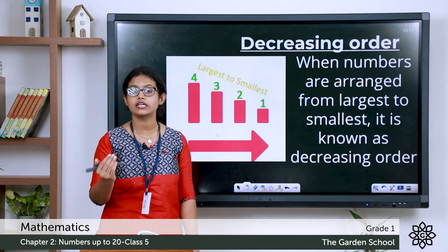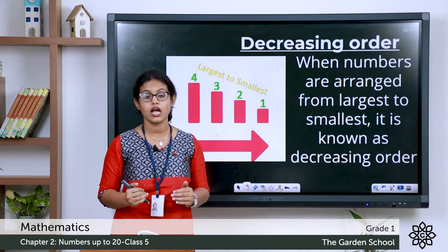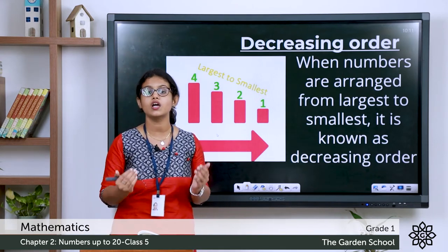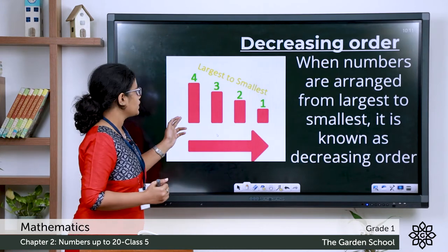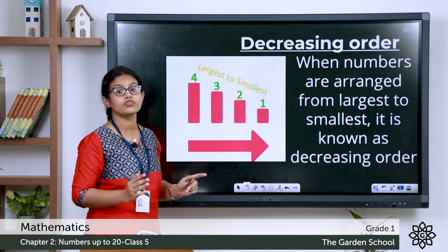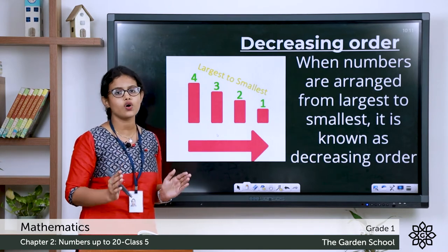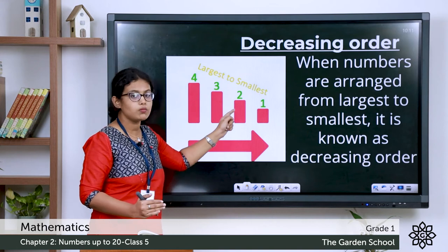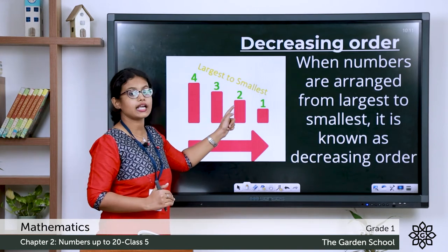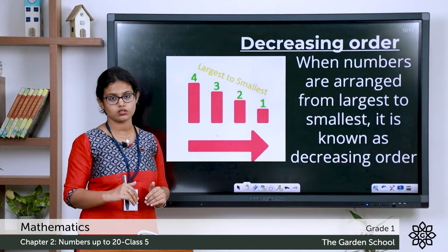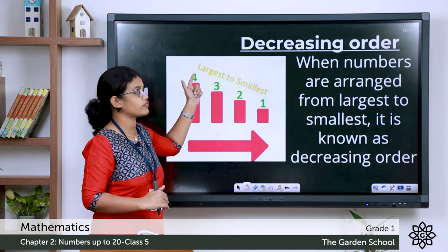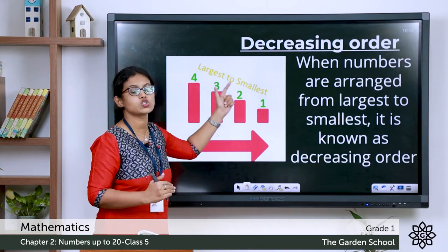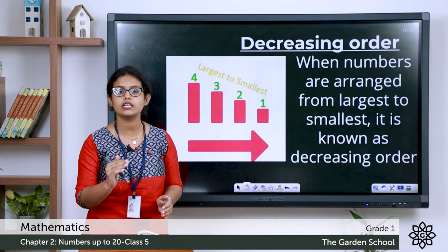Now let's see decreasing order. When you arrange numbers from largest to smallest, we call it as decreasing order or descending order. You can see the picture here. Imagine you are standing on the fourth block. From the fourth block you jump down to the third block, from the third block down to the second, and from the second block down to the first. From the larger number you came down to the smaller number — that is decreasing order.